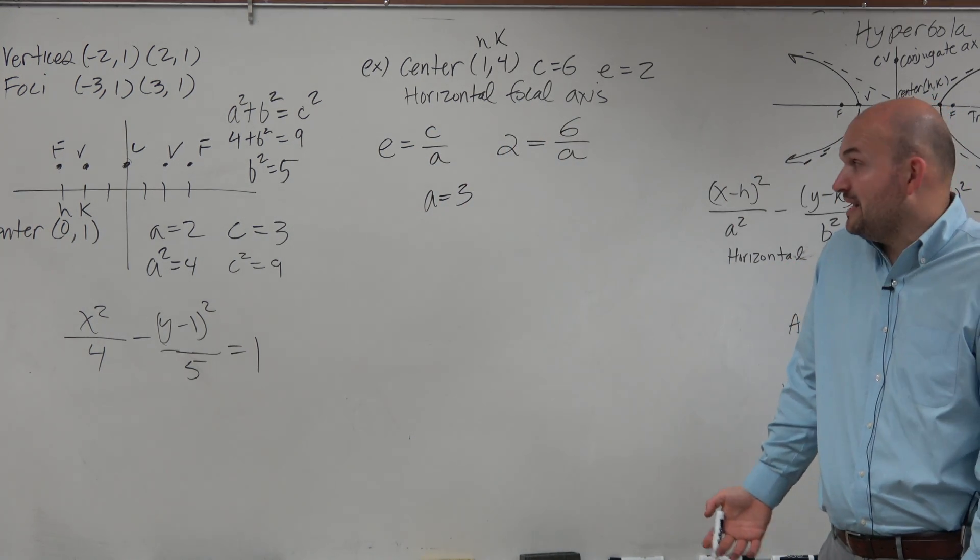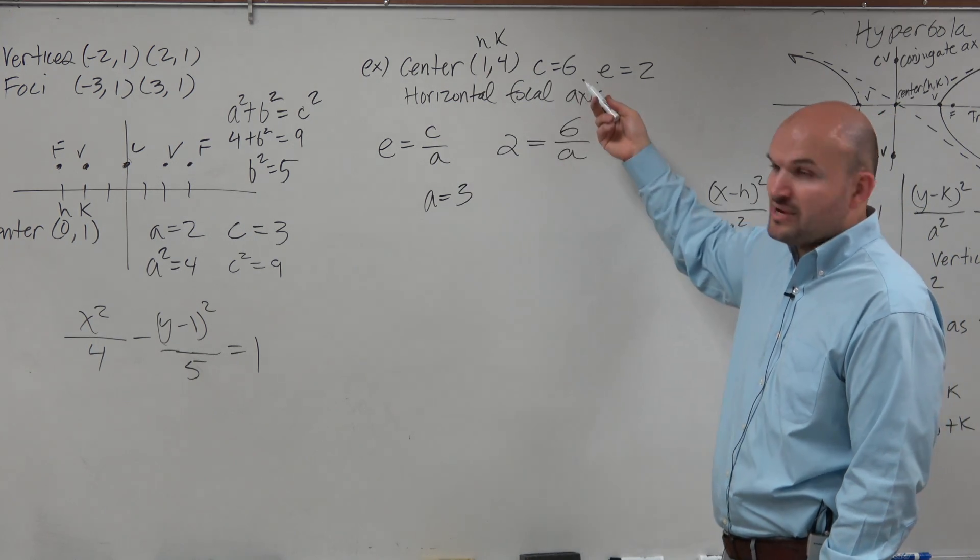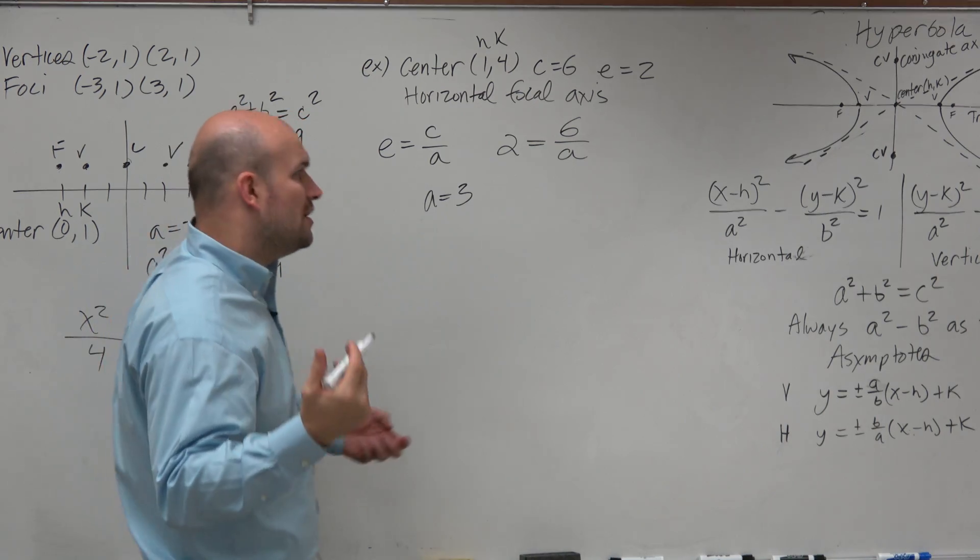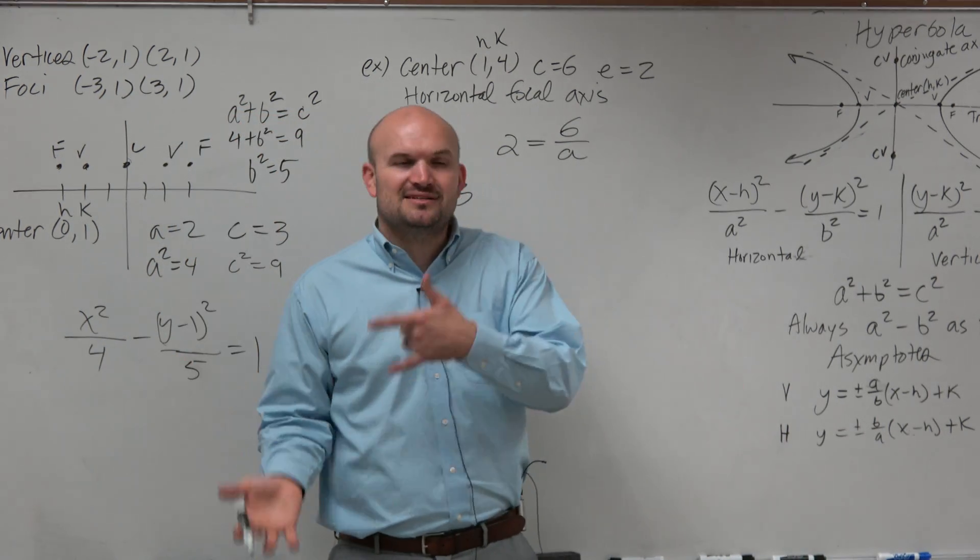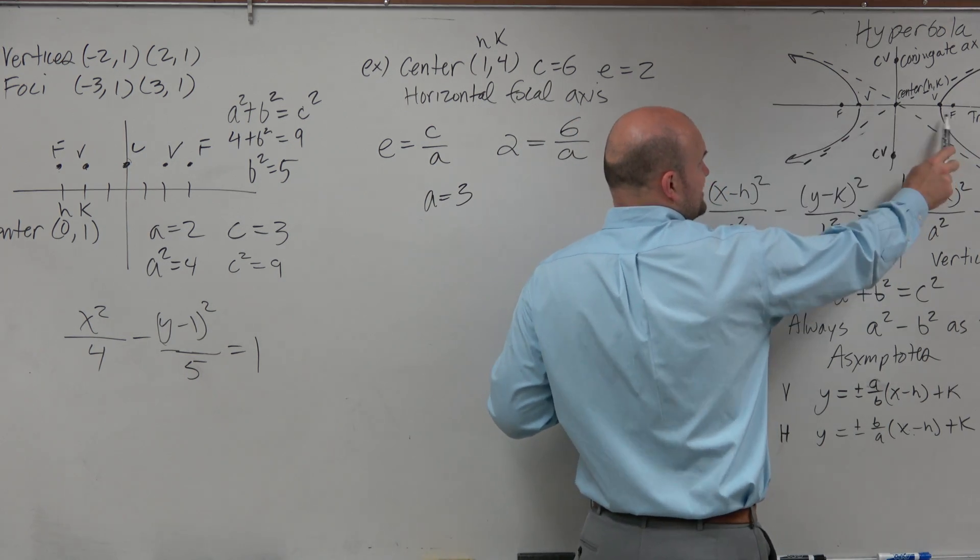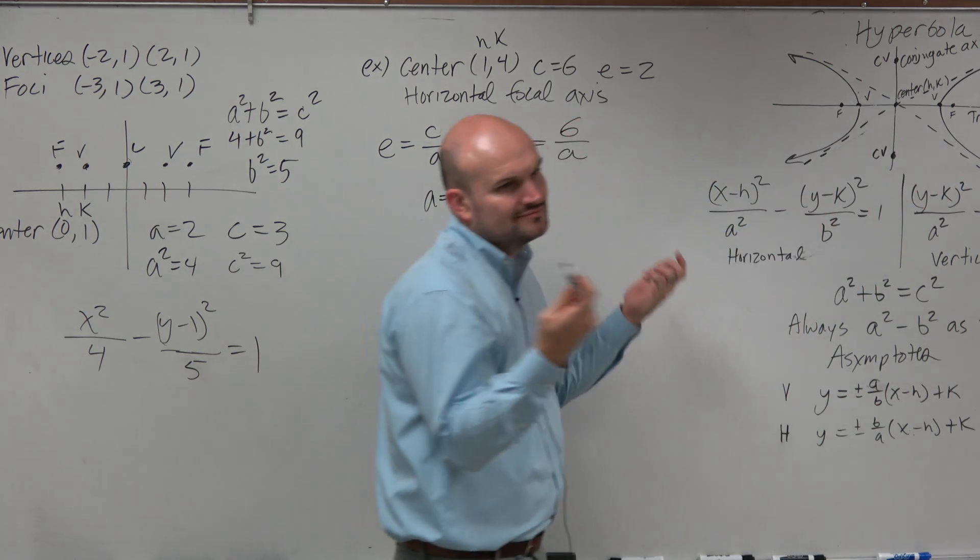Now we need to figure out b. And we can do that because we have a and we have c, right? When it says horizontal focal axis... So another thing, like I talked about in last notes, the focal axis lies on the transverse axis, but it's between the two foci. OK, right?